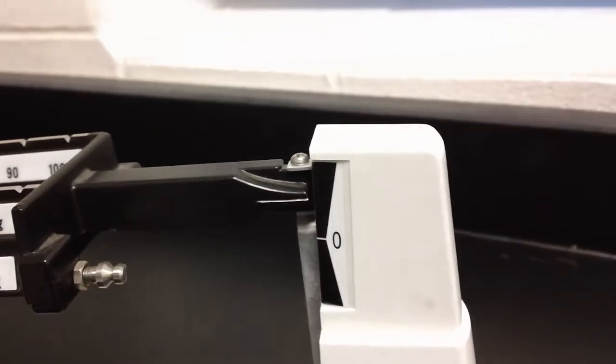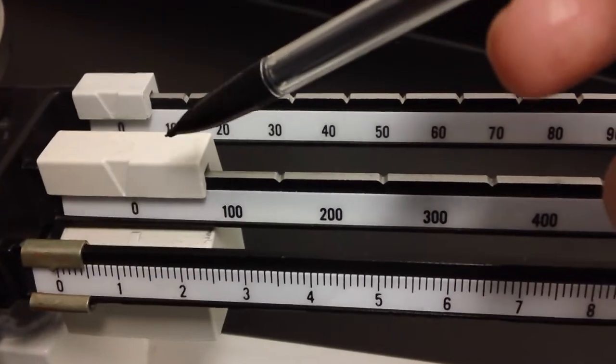What we're going to do now is we're going to use these counter masses in order to try to get this back to zero. That's our goal, to get this back to zero, and once we do, we'll count up how much of these counter masses that we had to use.